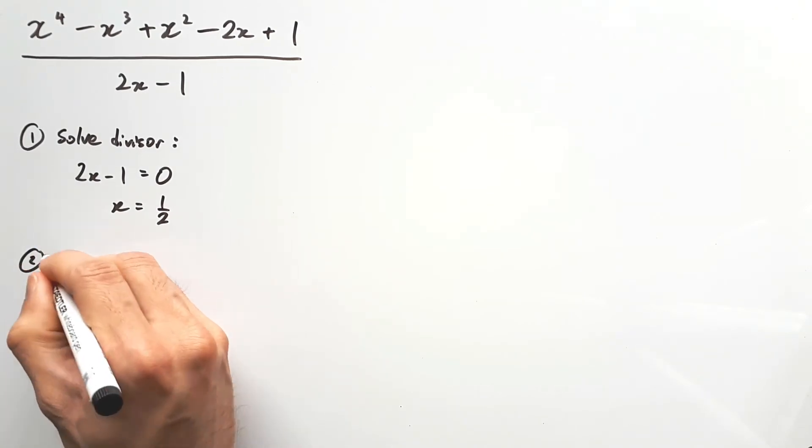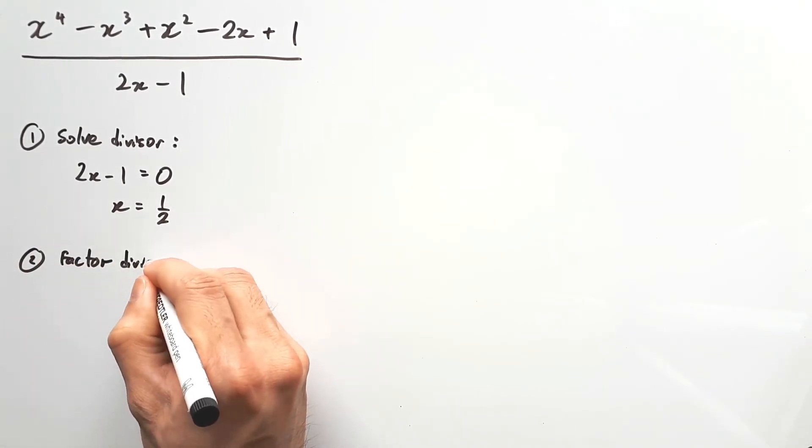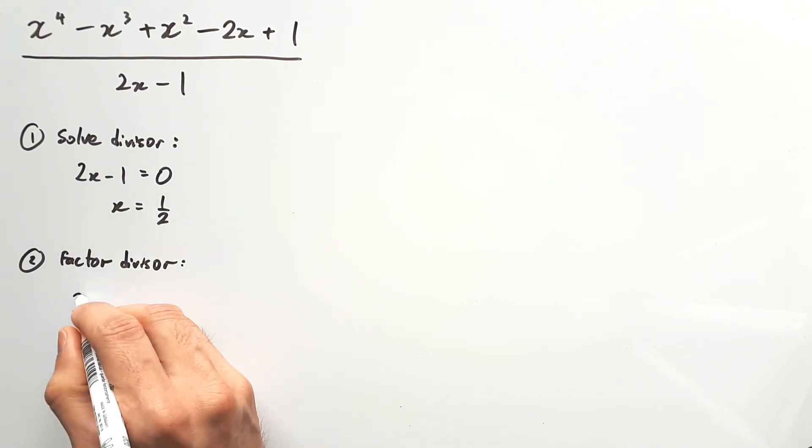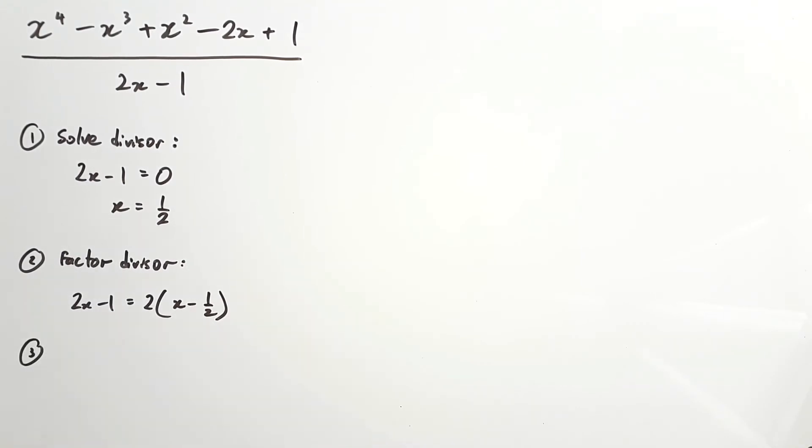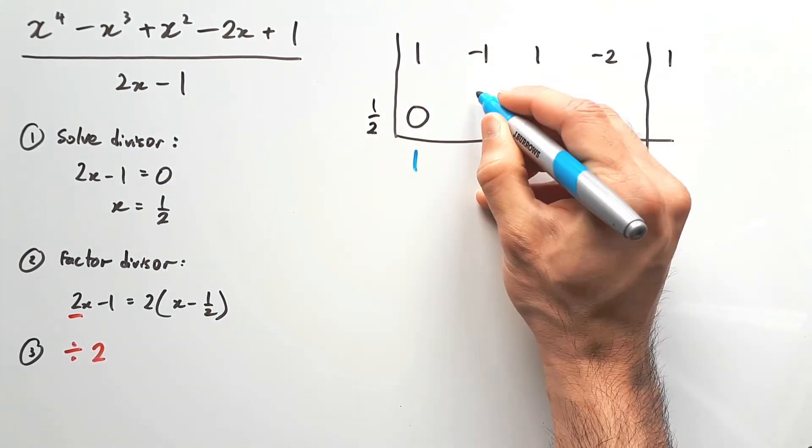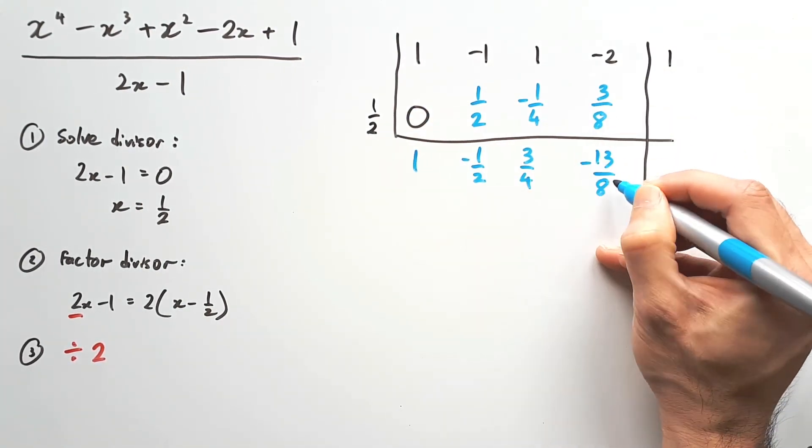Step 2 is to factorize the divisor. That'll tell us how to write the answer, the temporary answer. So 2x minus 1, factorize the 2, and we're left with x minus half inside. That's going to be our temporary divisor. The third step, which is the most important step, is to remember to divide by 2 at the end of your answer, because 2 is the number we have in front of our non-monic expression. So go ahead and do the synthetic division, set everything up, put the positive half outside, start adding and multiplying everything until you get to the remainder.